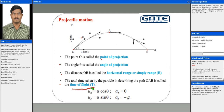Another term is the maximum height the particle reaches in the process. These terms are especially important when we are designing missiles, where we project a missile with some velocity at an inclination and try to reach a target at a distance from our location.